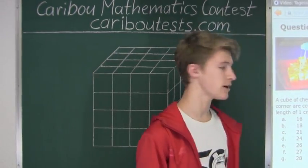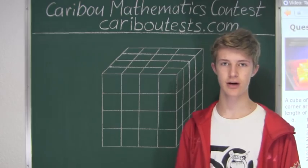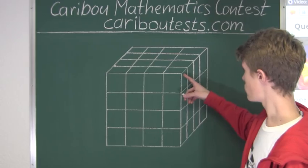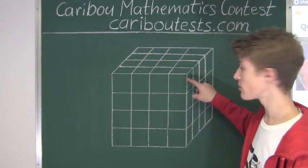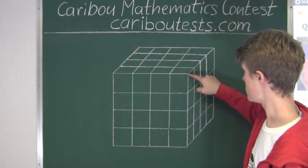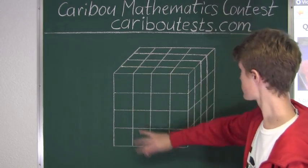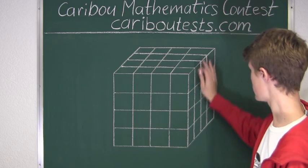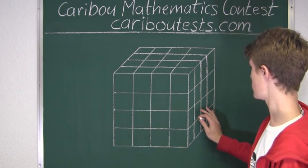We know from the question that the 3 faces of the cube meet in a corner, and those faces are covered with a thin layer of wax. So let's say those 3 faces meet at this corner right here. If they did, then that would mean that the front face, the top face, and the right face are all covered in wax.